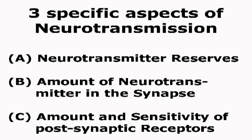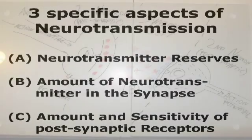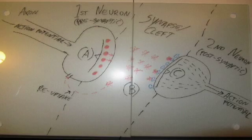In healthy brain chemistry, you have plenty of neurotransmitters present in the vesicles of the first neuron. Plus, the sensitivity of the receptors in the second neuron are in a healthy balance with the amount of neurotransmitter that is being released into the synaptic space or the cleft.